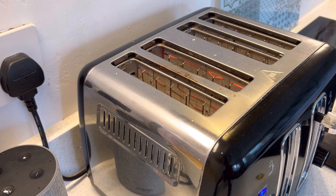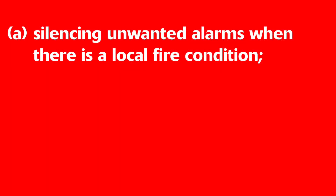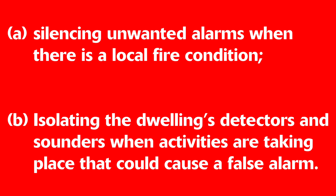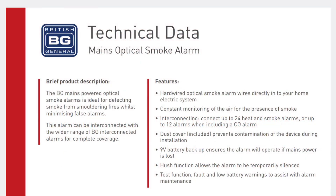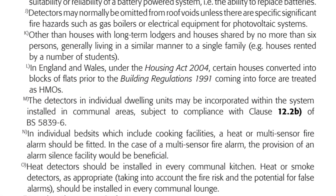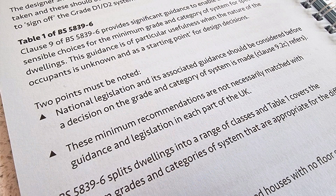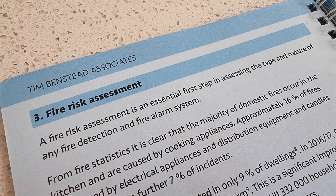However, it is really important to avoid sounding alarms and evacuating the building every time someone burns the toast. The clause mentioned in note M indicates there must be provision within each HMO dwelling for: A, silencing unwanted alarms when there is a local fire condition; and B, isolating the dwelling's detectors and sounders when activities are taking place that could cause a false alarm. So some means would be required to temporarily disable the detector for a timed period — such as by the use of a hush button that re-enables the detector after a short period of time has passed. You can really see the importance of using all the notes this table incorporates from just the few examples we've considered here, and keep in mind that these are the minimum requirements.